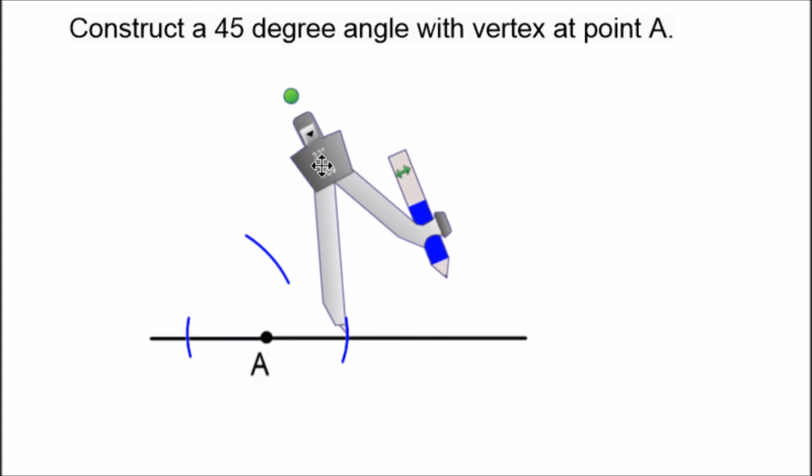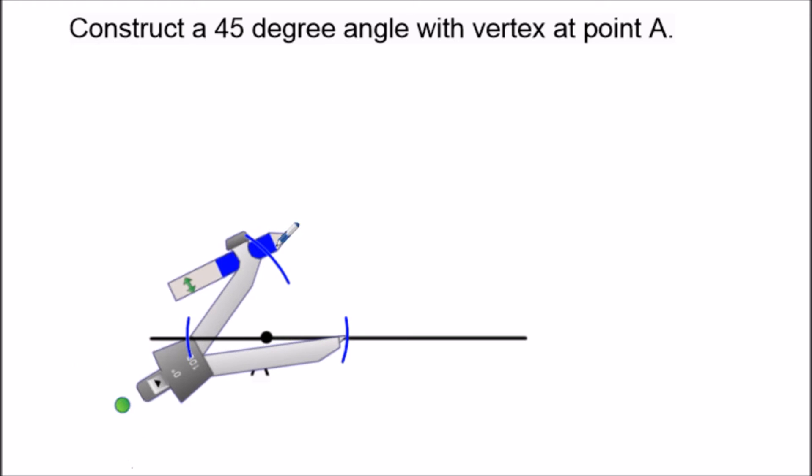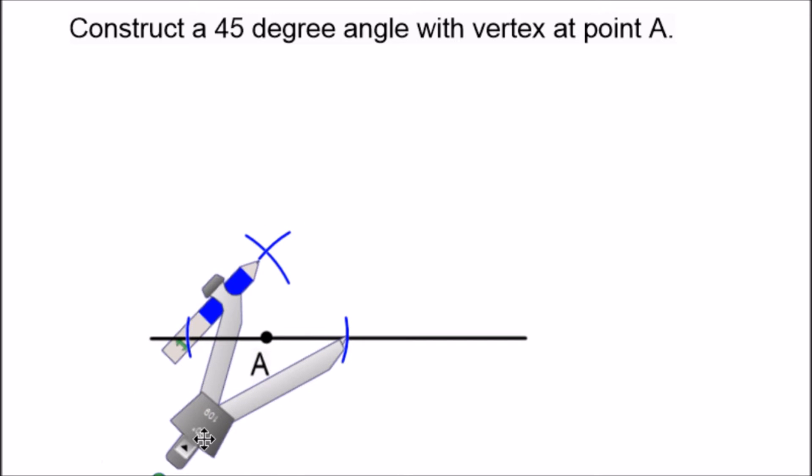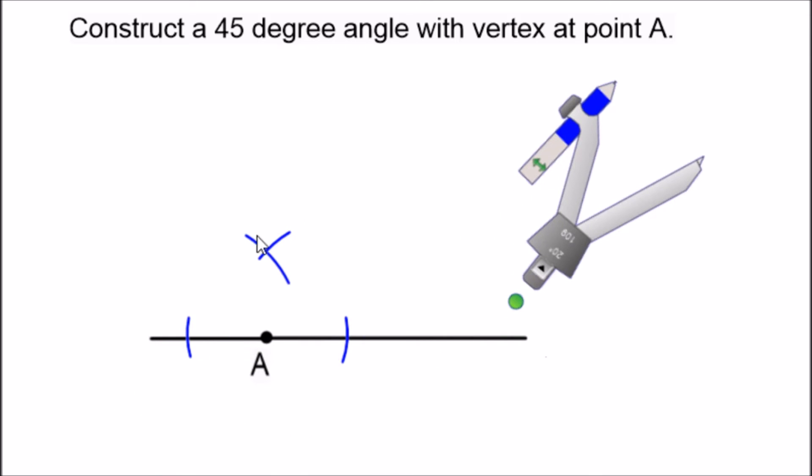So we swing an arc from the first point and we move it to the second point, swing another arc so that we could connect point A to this intersection of arcs. So we use a straight edge here to draw a straight line from point A through the intersection of arcs. And now what we just did is construct a 90 degree angle.